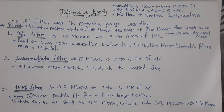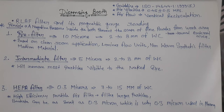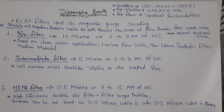The intermediate filter size is 5 microns and manometric gauge reading is 2-8 mm of water column. It will remove most particles visible to the naked eyes.